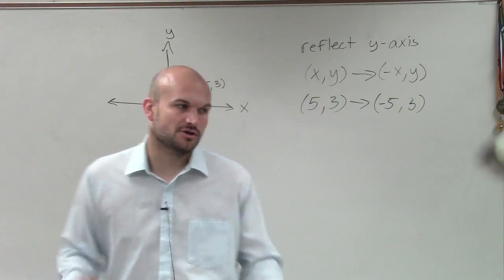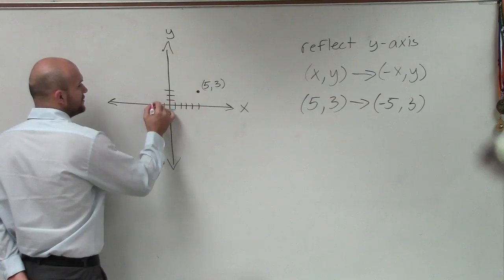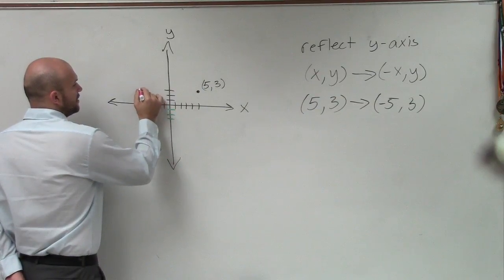So now let's go and plot that point and see what it looks like. So instead of being 5 over 3, now it's 1, 2, 3, 4, 5, up 3.